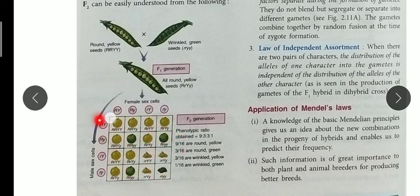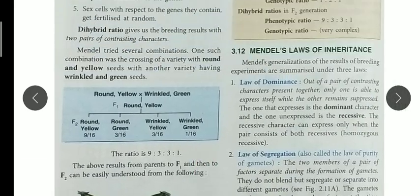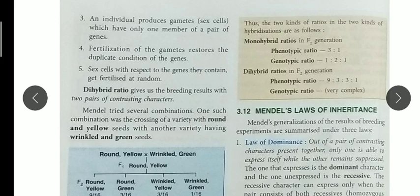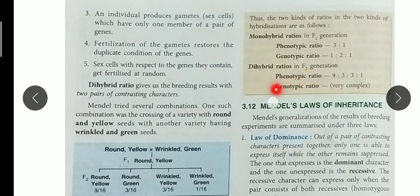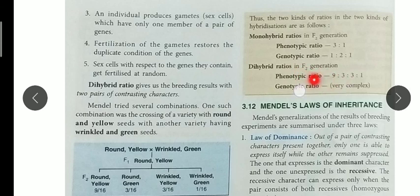In the exam, if they ask the genotypic ratio of the dihybrid cross, no need to learn the sequence because it is highly complex — simply write 'very complex.' The yellow box is very important: for monohybrid cross, F2 phenotypic ratio is 3:1 and genotypic ratio is 1:2:1. For dihybrid cross, F2 phenotypic ratio is 9:3:3:1, but genotypic ratio is very complex. If asked in the exam, just write 'very complex.'